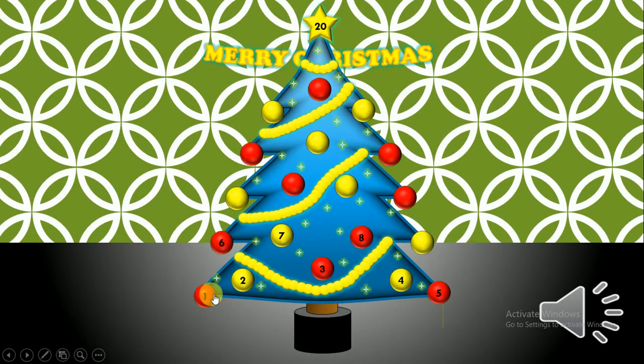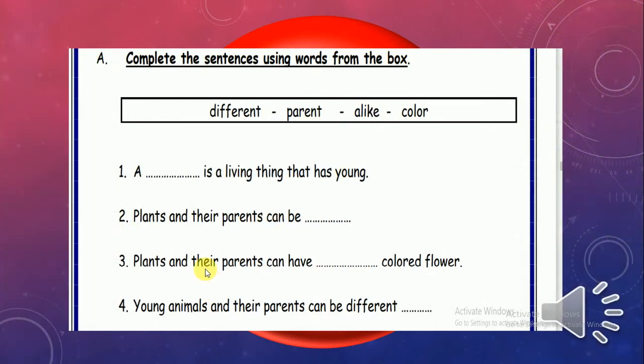Let's start our games. Number 1, we're gonna find this nice question. We're gonna answer just number 1. Complete the sentence using words from the box. A what is a living thing that has young?